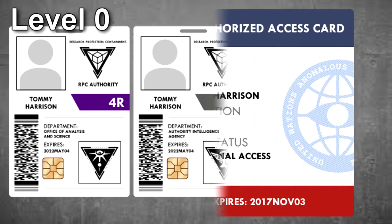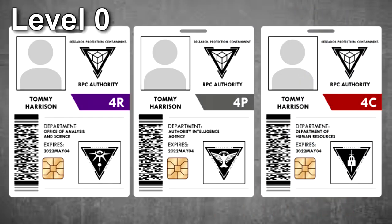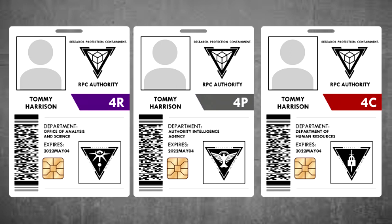Level 0 security clearance is the informal designation assigned to non-essential personnel, specifically confined subject or disposable personnel such as CSD-01234, test subjects, or contractors, who do not need access to information regarding the authority or its assets. Access to authority-sensitive data is restricted, and only partial information should be disclosed to ensure Level 0 personnel can perform their daily duties. Level 0 personnel are generally not assigned a branch code, unless their work is exclusively the purview of a single division — for instance, contracted construction personnel under containment division supervision might be classed as 0C clearance.